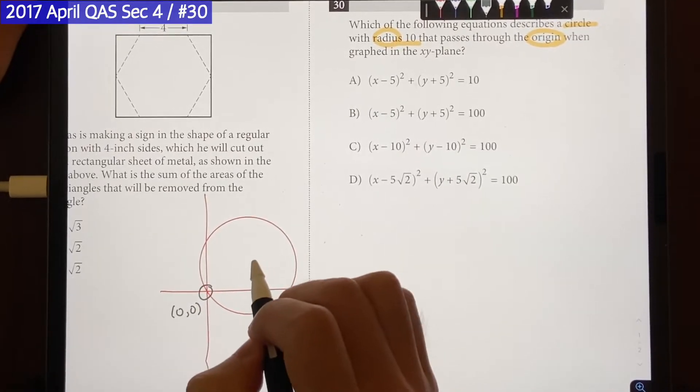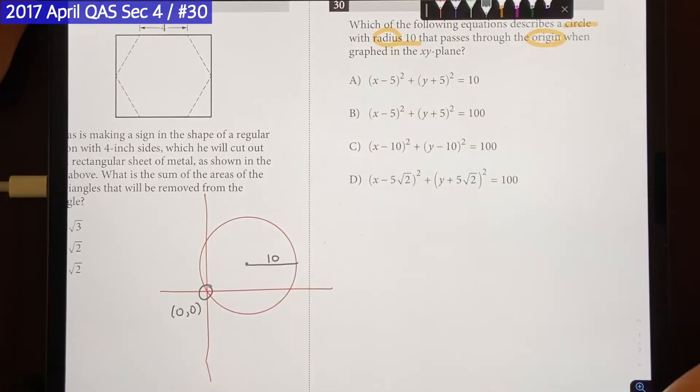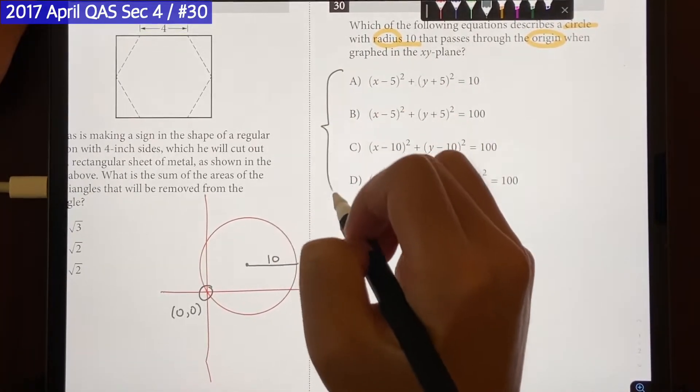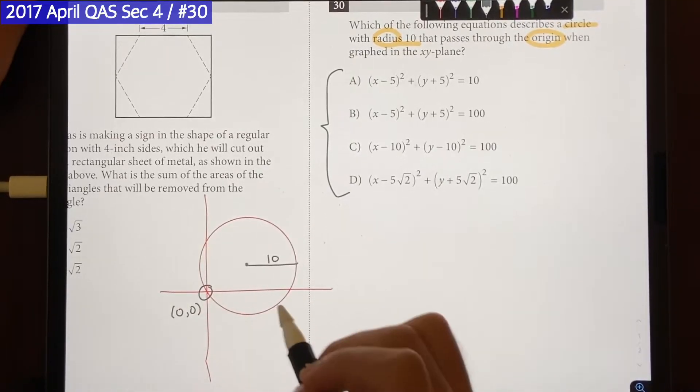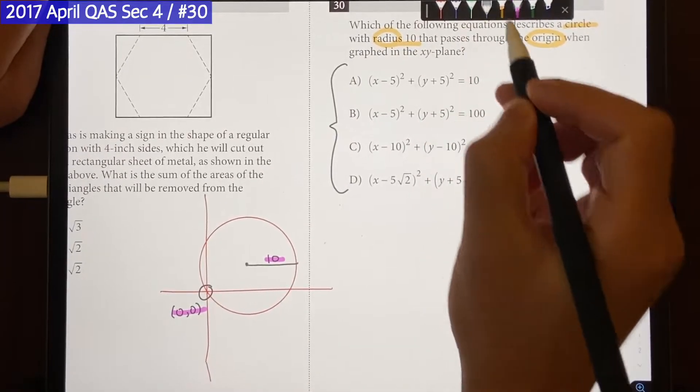and it also has a center and it has a radius of 10. And we're looking for the answer choices that correctly demonstrates what's going on here. So these are the two pieces of information that the question gives us but let's go over each of them.